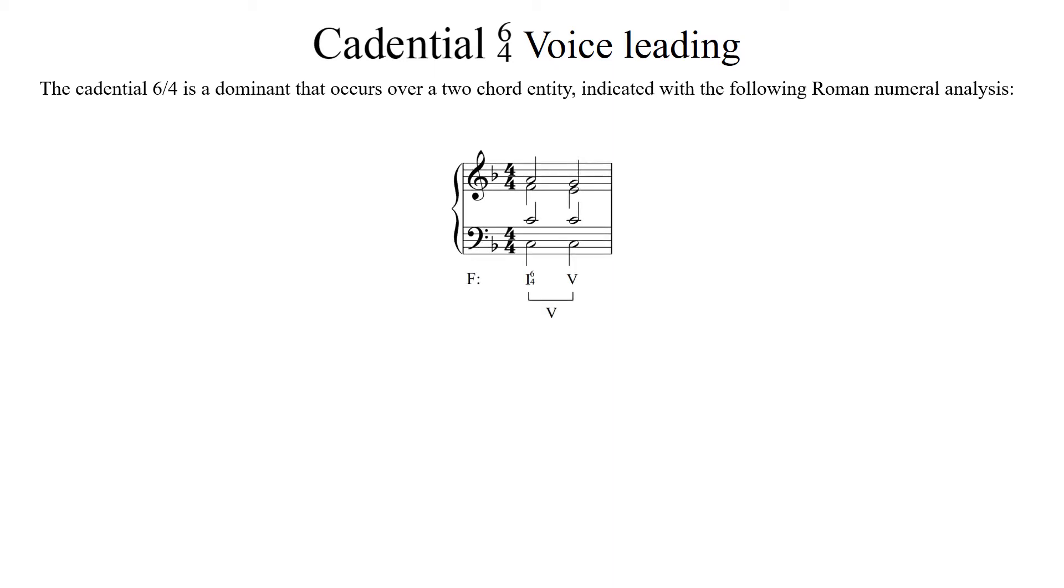As discussed in one of my prior videos, there are a few different analytical approaches to the cadential 6-4. The one used at my institution views the cadential 6-4 as a dominant occurring over a two chord entity beginning with a 1-6-4 followed by a dominant chord as seen in the example below within the key of F major. A bracket links the two chords with a Roman numeral 5 placed below to indicate the two chords together serve a dominant function.